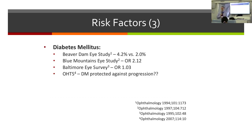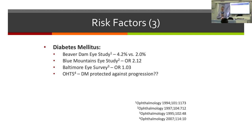Diabetes is thought by many patients to be a risk factor for glaucoma, but the evidence is quite modest. In one epidemiological study, the risk of glaucoma was about twice that in diabetics compared to non-diabetics. Interestingly, the Ocular Hypertension Treatment Study showed that diabetes appeared protective, though this was probably due to case selection, as many patients with diabetes were excluded.